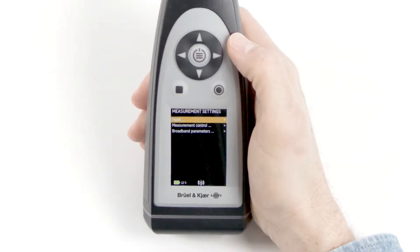Under measurement settings, we have three menus: Input, measurement control, and broadband parameters.